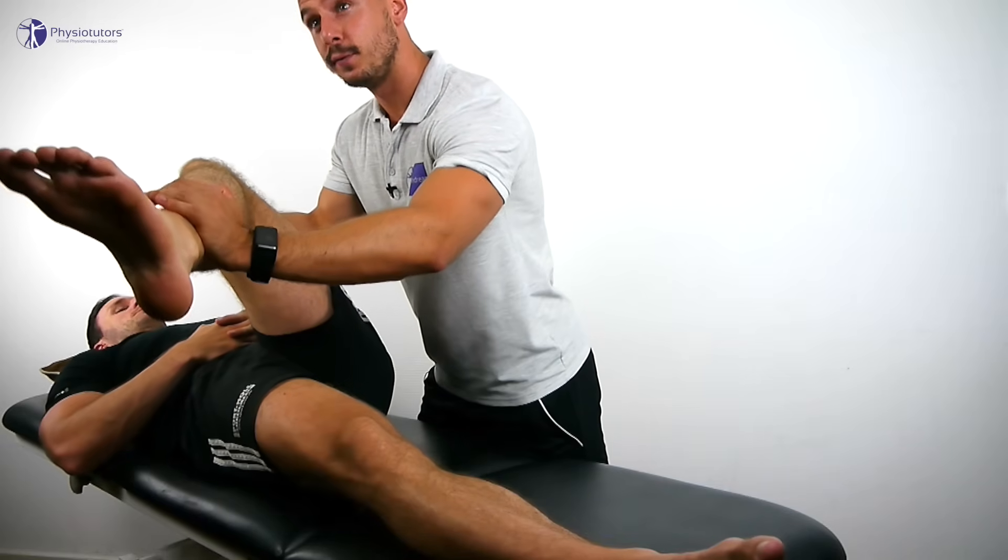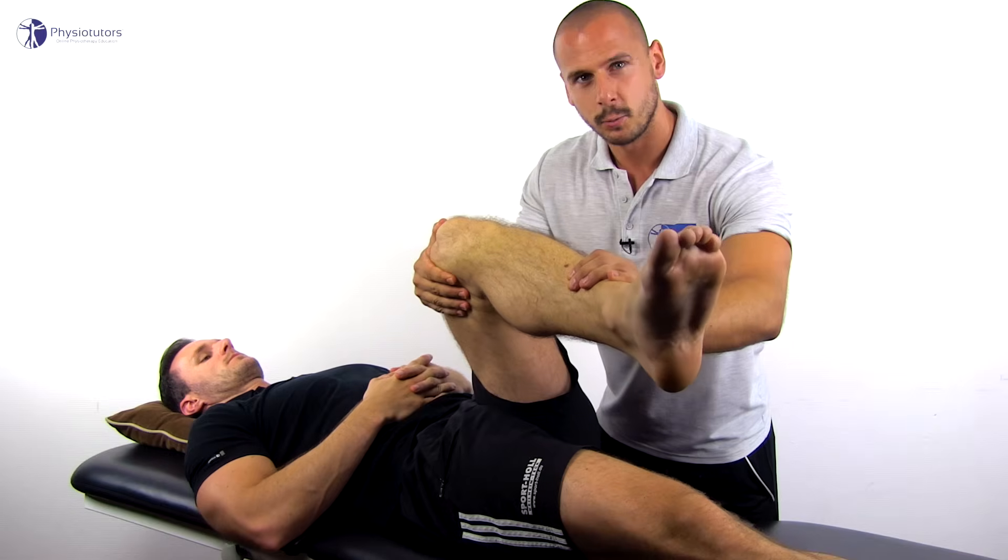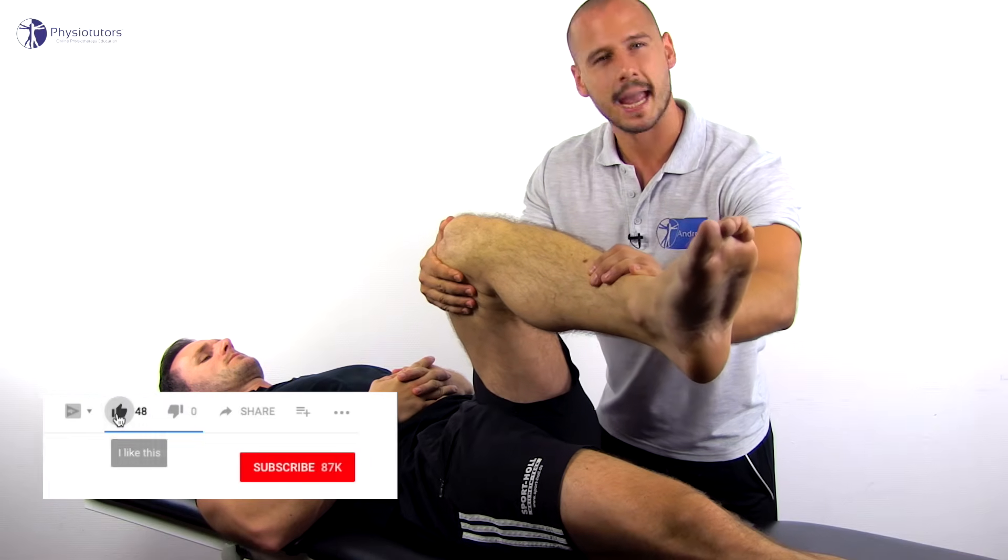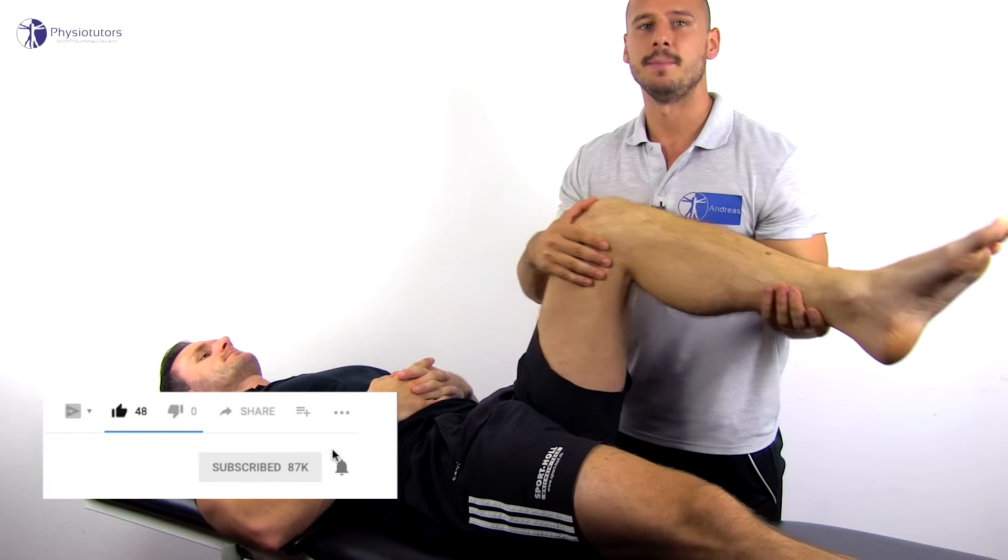Now ask the patient to perform isometric internal rotation against your resistance, which will increase both tensile and compressive forces on the tendon of the gluteus medius and minimus.